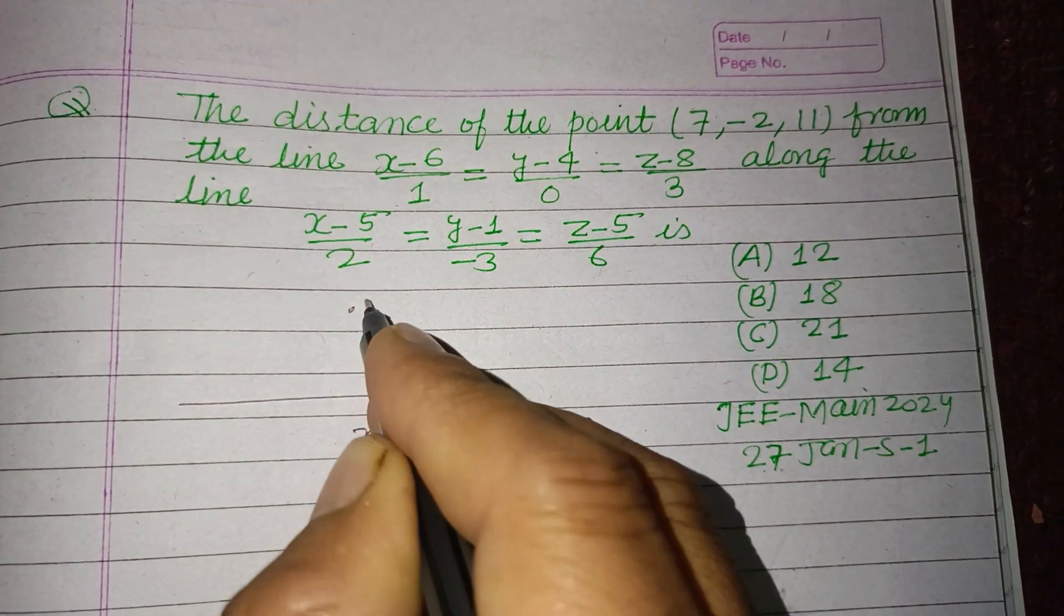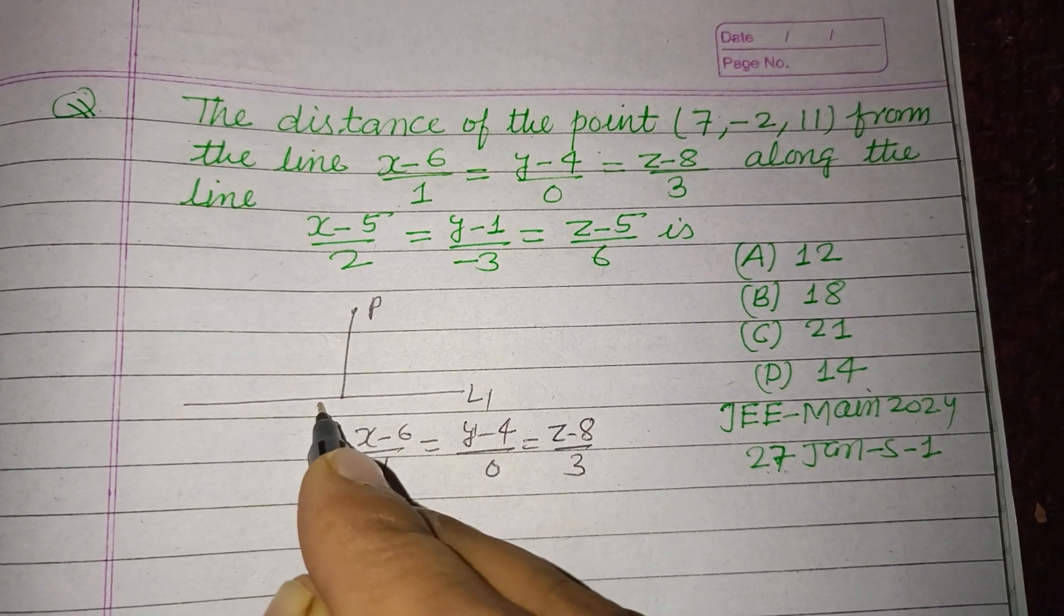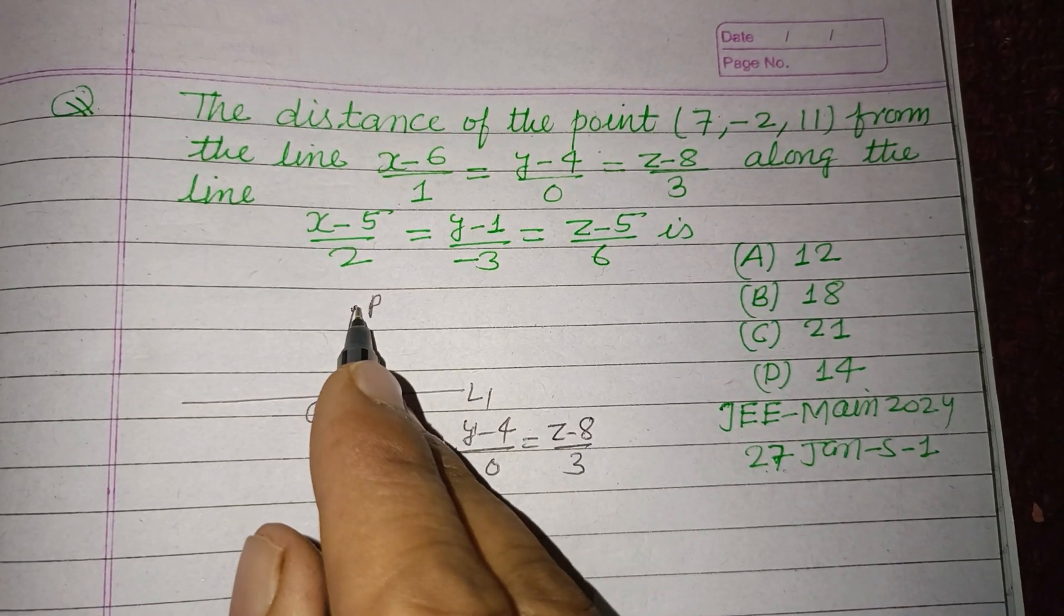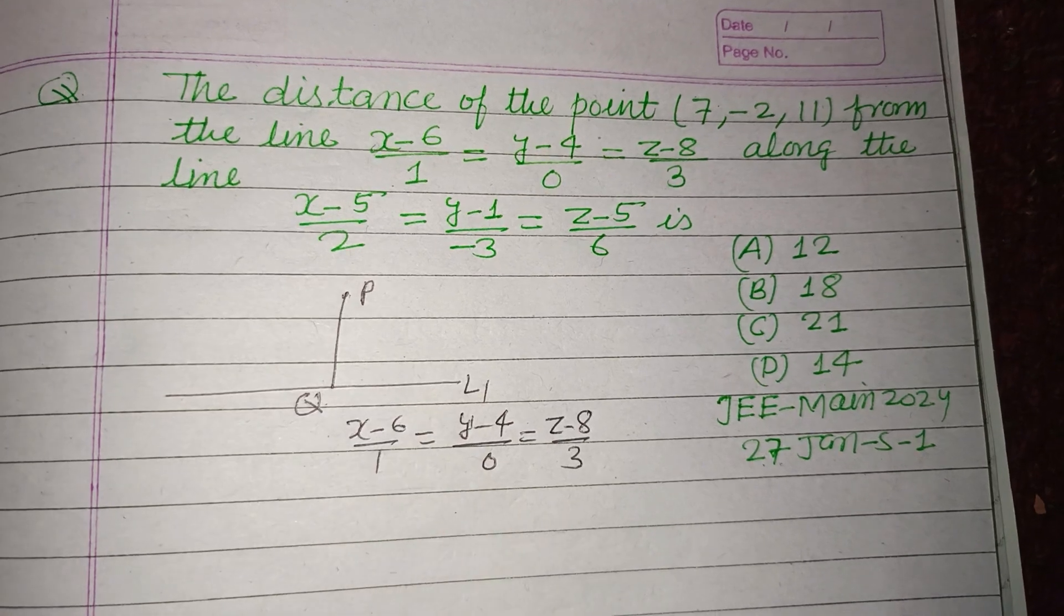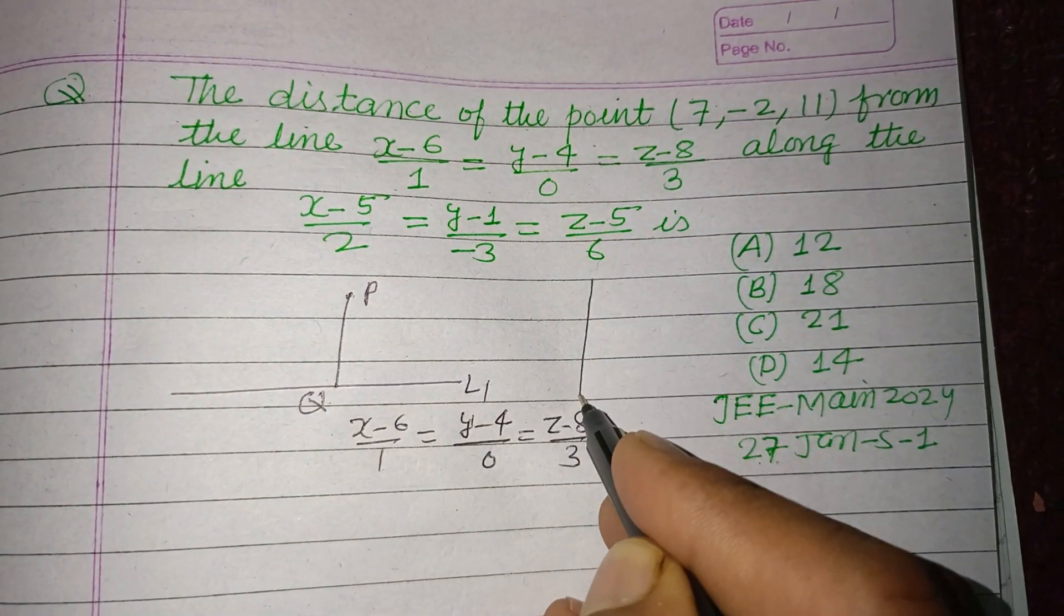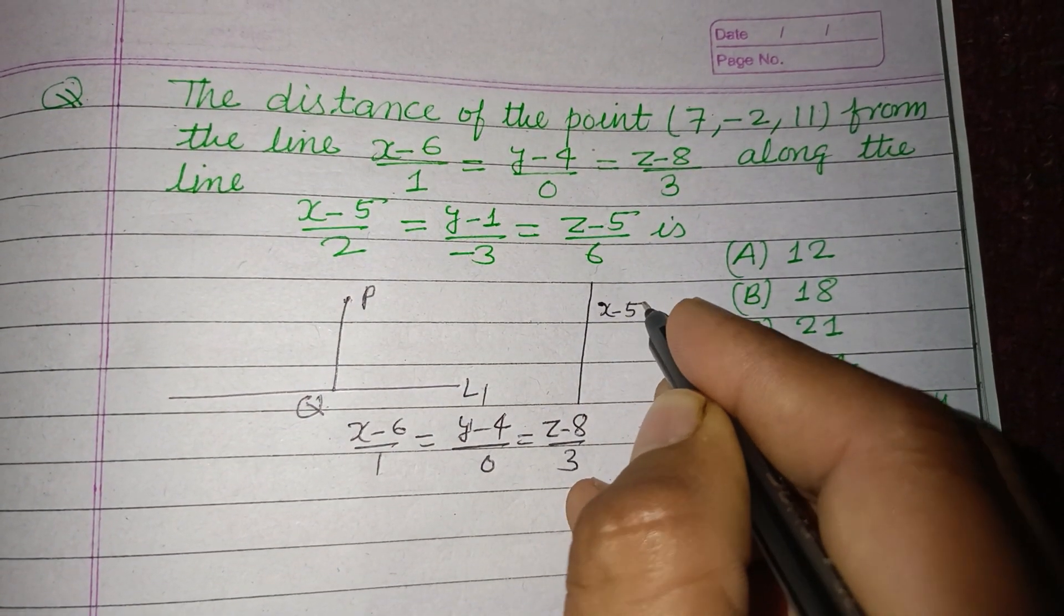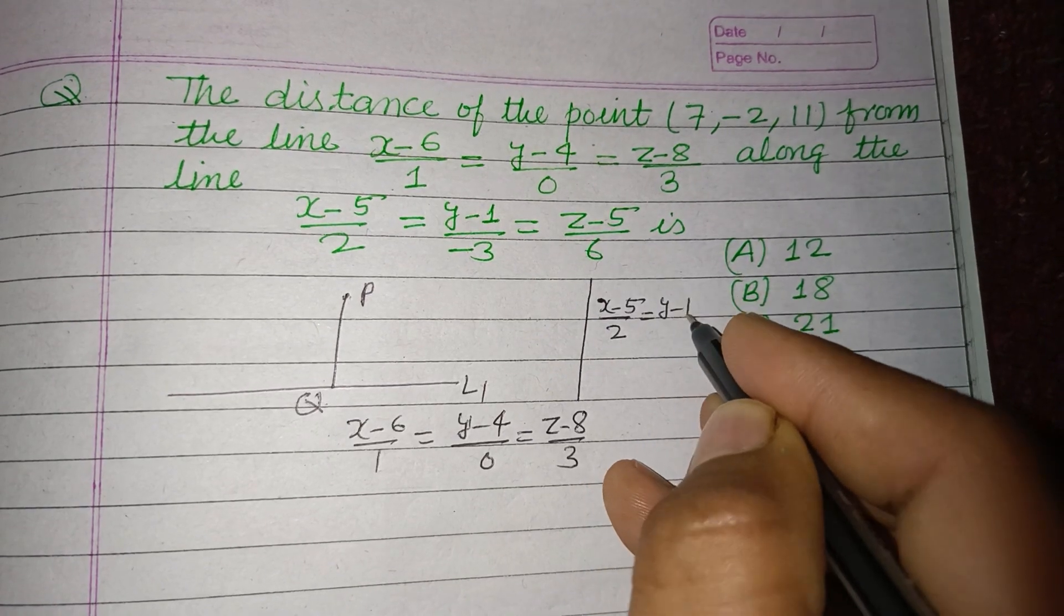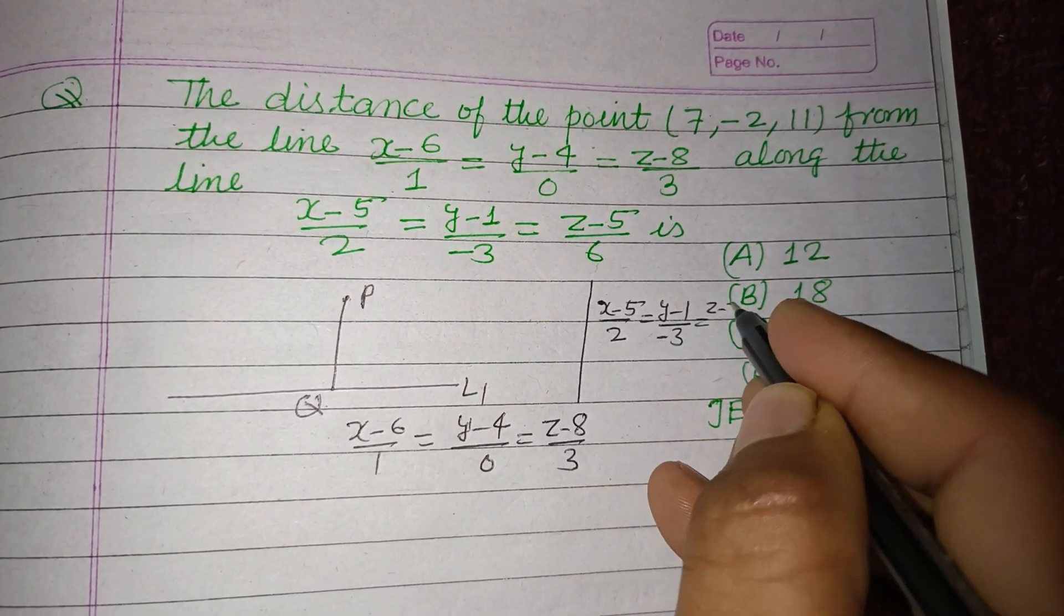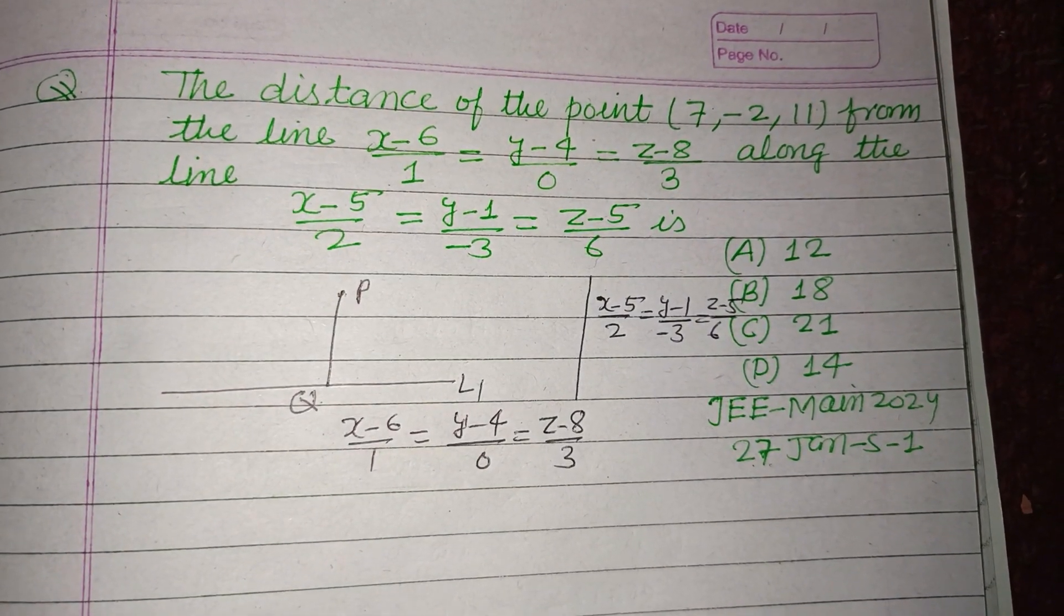And here is a point P, and we want to find out its distance. This distance of point P from Q on this line, where PQ is parallel to the given another line: (x-5)/2 = (y-1)/(-3) = (z-5)/6. Okay, so let